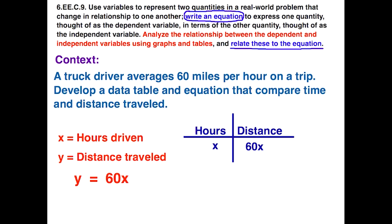Now, there's nothing that says that you have to use X and Y. So it might be a good idea to, maybe for the hours driven, use H for hours, and for distance, use D for distance. Just be sure that students understand which one is the independent variable and which one is the dependent variable, in those cases where it might be better to use something other than X and Y as your variables.